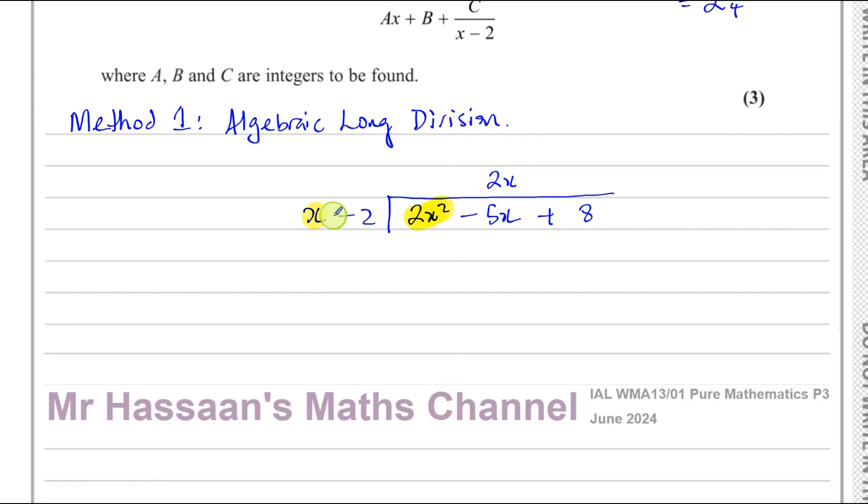So now we multiply this 2x with these two terms. 2x times x is 2x squared, and it should always end up the same as this because that's how you got it in the first place. And 2x times minus 2 is minus 4x.